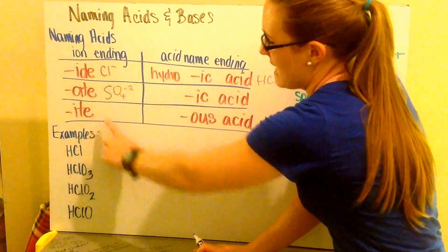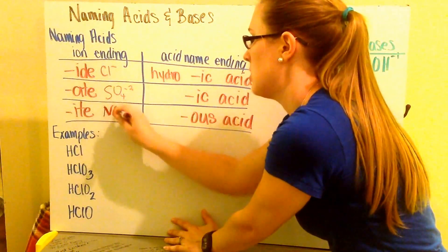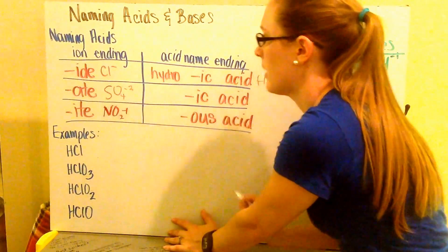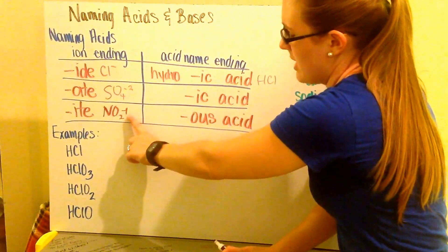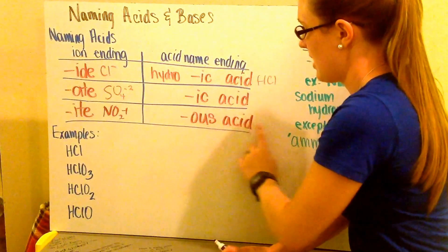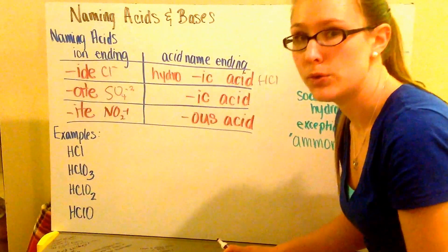Then we have our ITE ending. An example of an ITE ending is nitrite, which is NO2, which is minus 1. So nitrite, if that was our ending, we'd have nitrous acid with an OUS ending. Okay, so let's go through a couple examples.